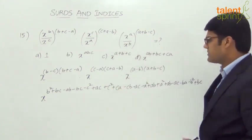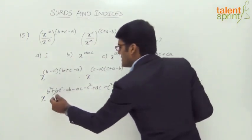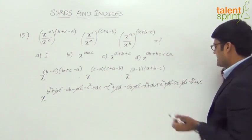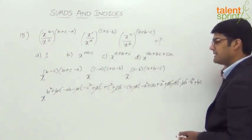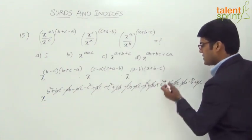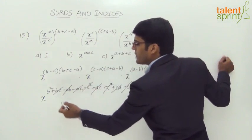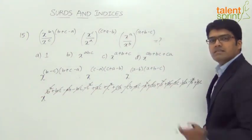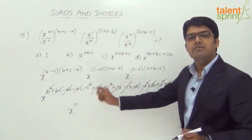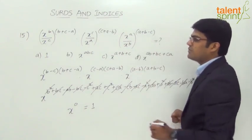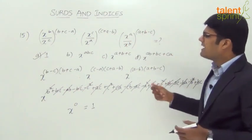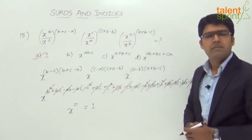Simplifying the expression, we see many cancellations: −bc+bc, +ca−ca, +ab−ab, +ac−ac, −ab+ab, −bc+bc, −a²+a², +c²−c², and +b²−b² all cancel. All terms in the power cancel, leaving x^0. Since any base to the power of 0 equals 1, the answer is option A: 1. This method looks lengthy but can be done quickly.